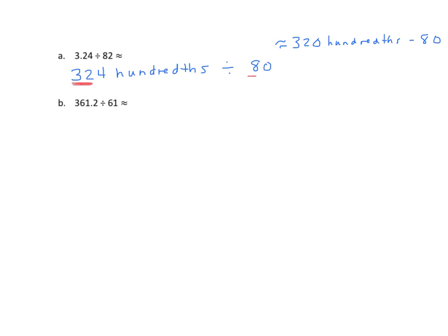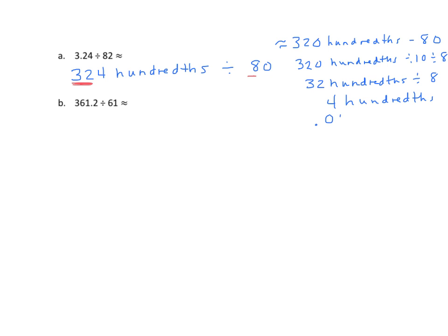So I'm going to have 320 hundredths divided by 80. I'm going to take 320 hundredths, divided by 10, divided by 8. And that would be 32 hundredths divided by 8, which would equal 4 hundredths. Now I'll put 4 hundredths in standard form, and the answer is 4 hundredths.